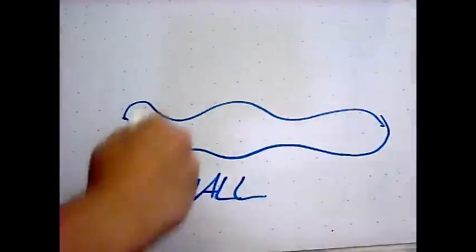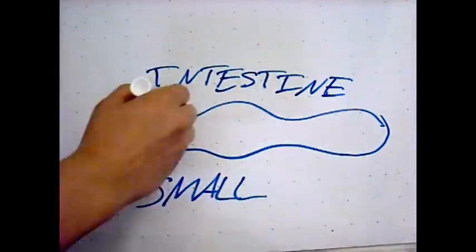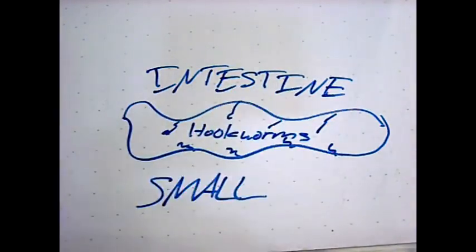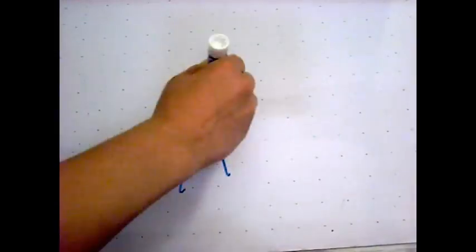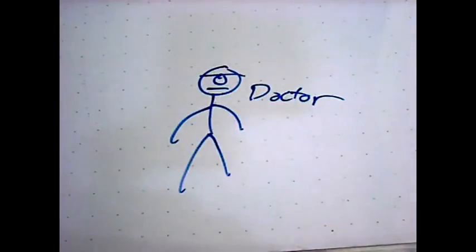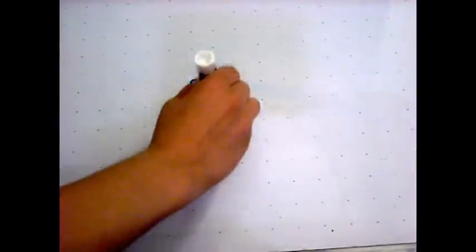This is where the hookworm sets up shop in your small intestine. They attach themselves to your small intestine and feed on your blood. This can cause anemia in some people. As the worms grow, symptoms worsen and you can be easily diagnosed with hookworms through a stool sample.